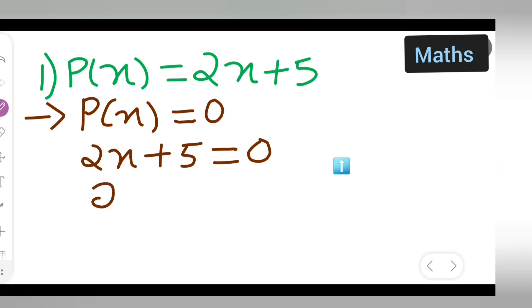So 2x is equal to minus 5, because if I take this positive term to the other side it will become minus 5. Next, x is equal to minus 5 upon 2.